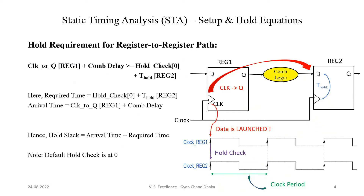Now let's look at the hold requirement for a register-to-register path. When data is launched at the rising edge of Clock_reg1, it will be captured at the register 2 rising edge. The hold check is done at the same clock edge at which the data is launched — that is, at the corresponding rising edge of Clock_reg2 at the same time instance.